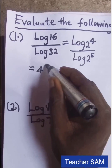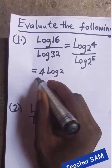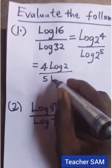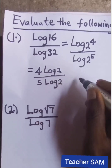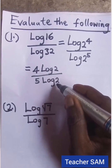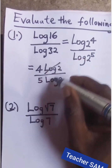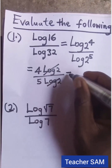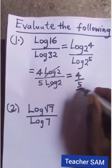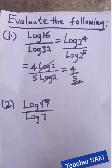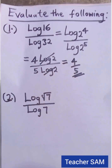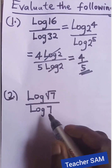Now, don't forget — the power of the log comes out as a multiplier, so we get 4 log 2 divided by 5 log 2. The log 2 to base 10 terms are common, so we can cancel them out. By the time you take that out, you have 4 over 5. This is what your examiner expects for questions like this.